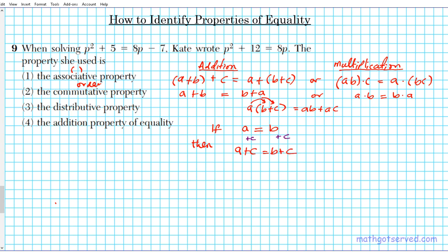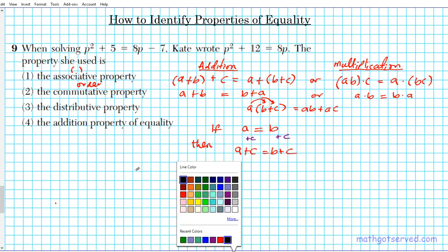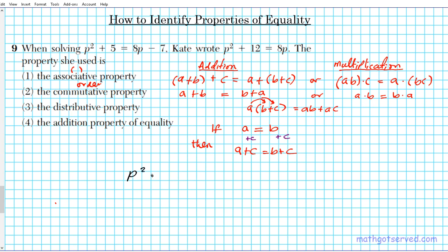All righty, so let's see what's happening in the problem that Kate is working on. Kate started with p squared plus 12 equals 8p minus 7. And then she ended up with p squared plus 12 equals 8p. What happened here? You notice that this negative 7 that was present here before is no longer present. She kind of got rid of the negative 7 from the left side. So the question now is what do we do to both sides of this equation so that this negative 7 is gone?